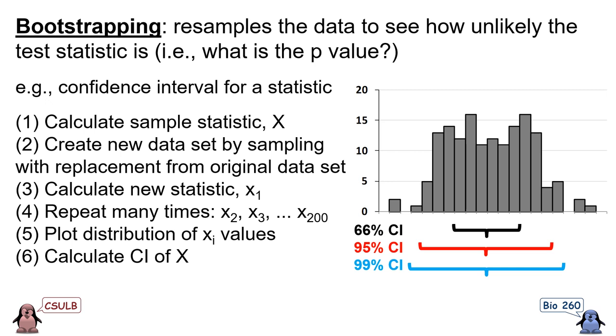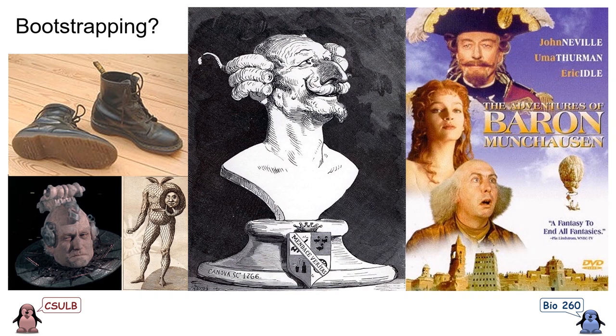Bootstrapping seems to rely on circular logic, and in fact, that's where its name comes from. In 1785, Rudolf Raspe wrote a book called Baron Munchausen's Narrative of His Marvelous Travels and Campaigns in Russia, later made into a movie with Monty Python cast members and Robin Williams in 1988. The story includes a scene where the Baron gets stuck in a muddy swamp and saves himself by grabbing the straps on the back of his boots and pulling upwards, lifting himself out of the mud — a metaphor for the circular logic that appears to be at play in the bootstrapping statistical technique.